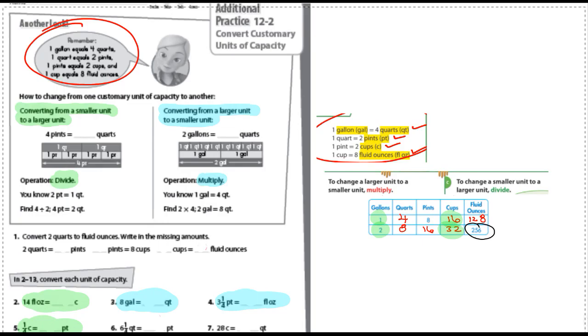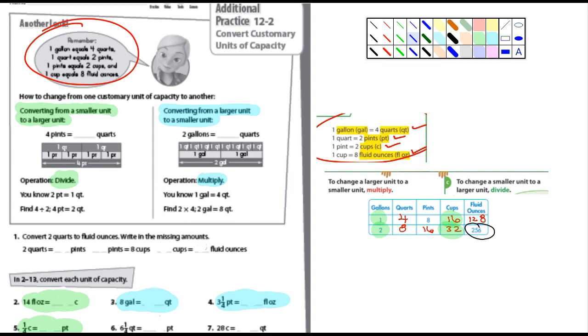What I did do is I pulled the one gallon equals four quarts right here, one quart, two pints, and so forth for you just so you can have it here to look at it. This is not in your book. You will not find this page in your book.